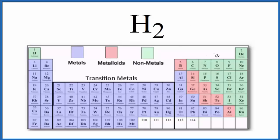For hydrogen, if we look at the periodic table, we have it divided here in metals, metalloids, and nonmetals. Hydrogen over here is a nonmetal.